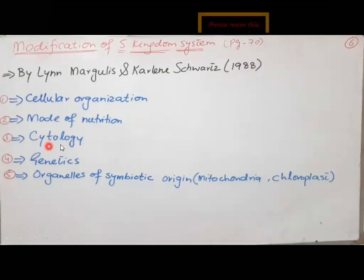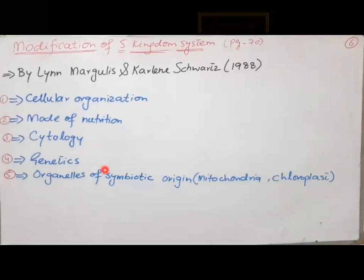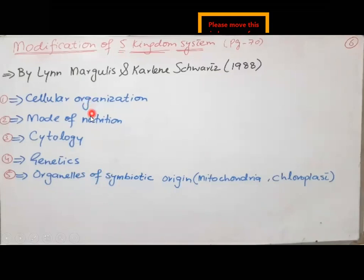The next basis was cytology — the study of the cell — and then genetics: for example, biochemistry or the structure of DNA, the proportion of various organic and inorganic substances, RNA, synthesis of protein, and its inheritance. Additionally, the organelles of symbiotic origin, such as mitochondria and chloroplasts, were considered. The modification of the five kingdom system by Margulis and Schwartz was based upon these five important points. There will also be a short question about which factors the modification of the five kingdom system is based on.